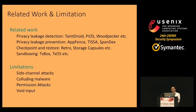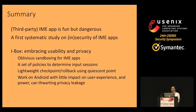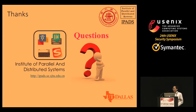IBOX is related to prior work on privacy leakage detection and prevention, as well as checkpoint and rollback and sandboxing. Currently, IBOX is a first step in this direction and has limitations, including vulnerability to side channel attacks, colluding attacks, attacks on the Android permission system, and it currently cannot handle voice input. In summary, we showed that third-party IME apps are fun but very dangerous, conducted the first systematic study on IME app insecurity, and described IBOX with the goal of embracing both usability and privacy.